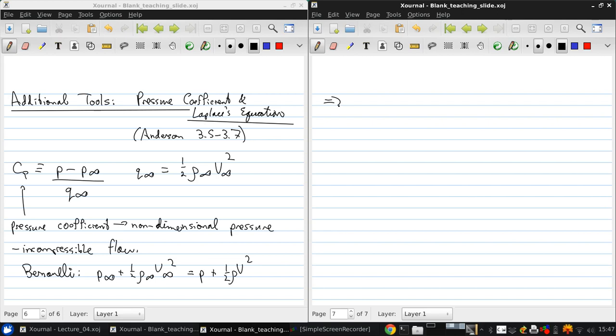If we rearrange that and take P minus P infinity, that gives us one-half rho—because rho infinity and rho are the same because it's an incompressible flow—and we can factor that out, therefore, and we get a difference of the square of the velocities.